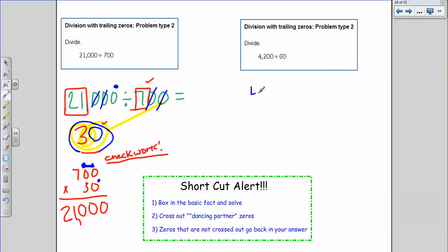I have $4,200. And I have to divide that between 60 people. First step, box in our basic fact. So my basic fact is going to be 42 divided by 6. I know that 42 divided by 6 is 7.